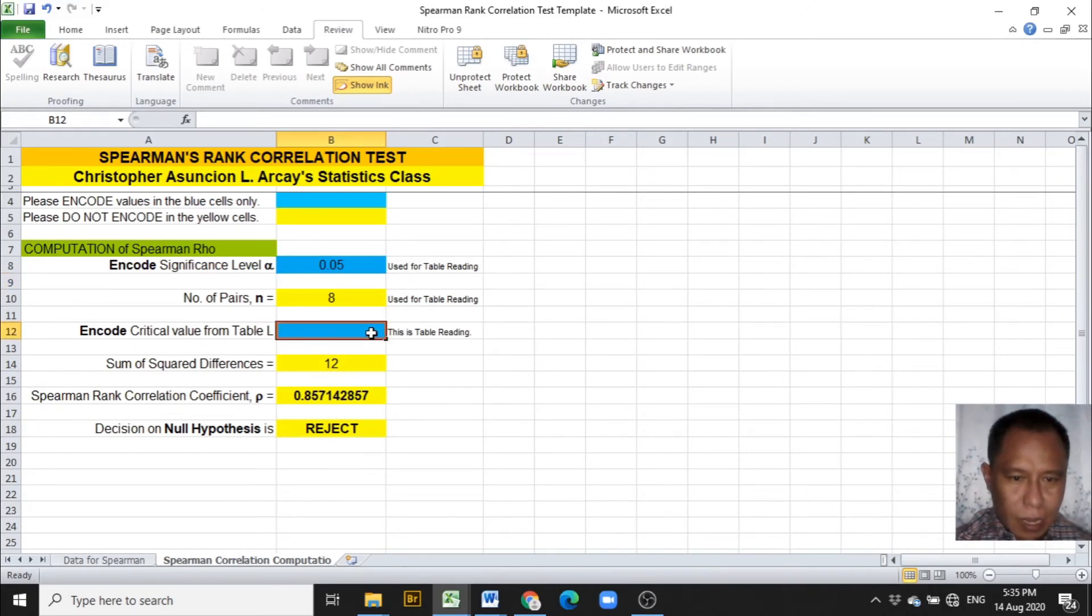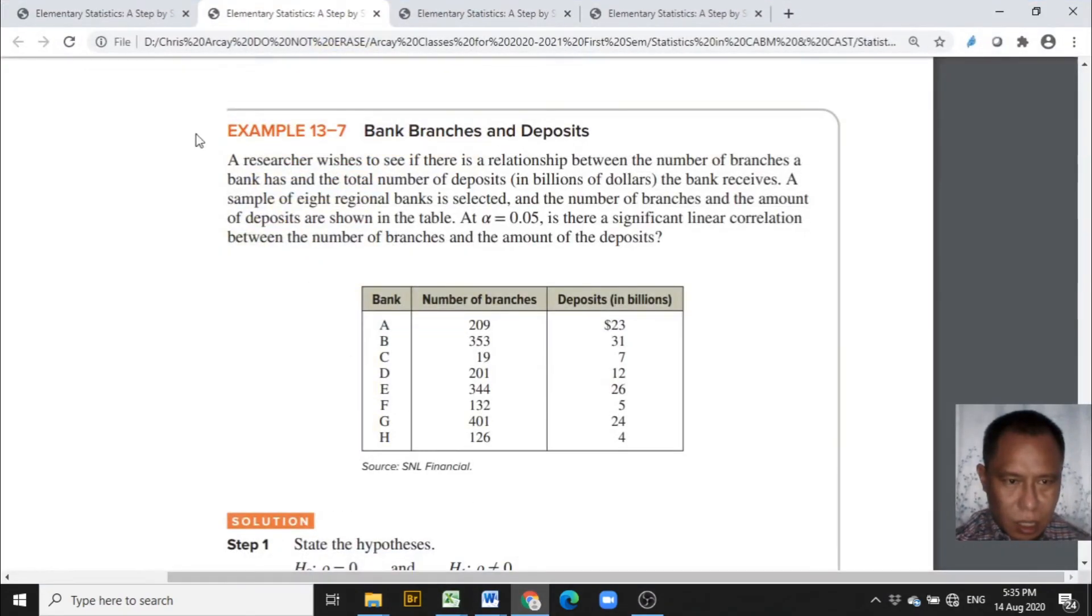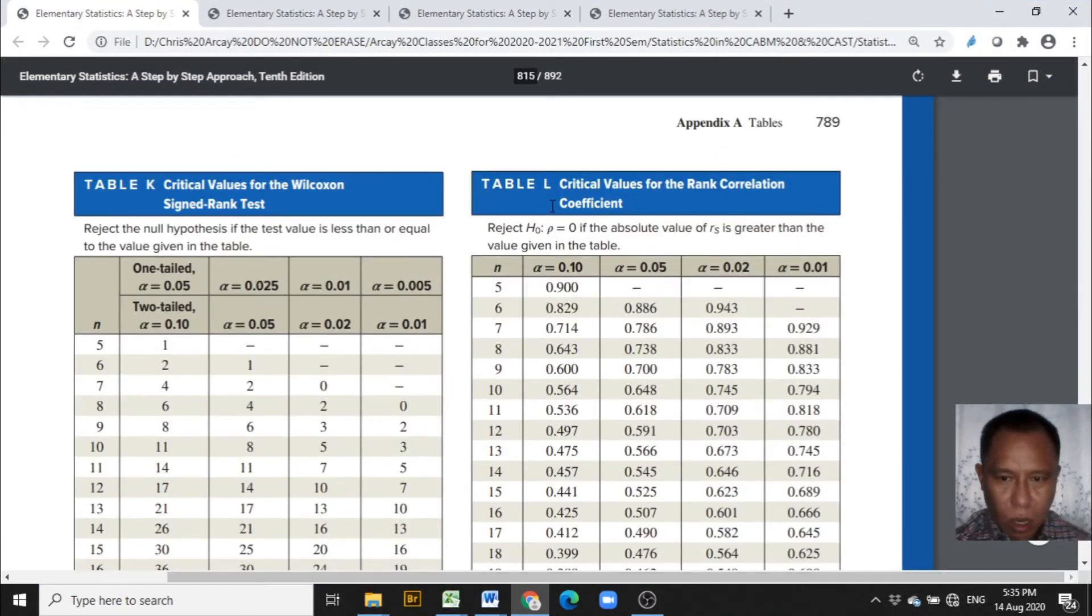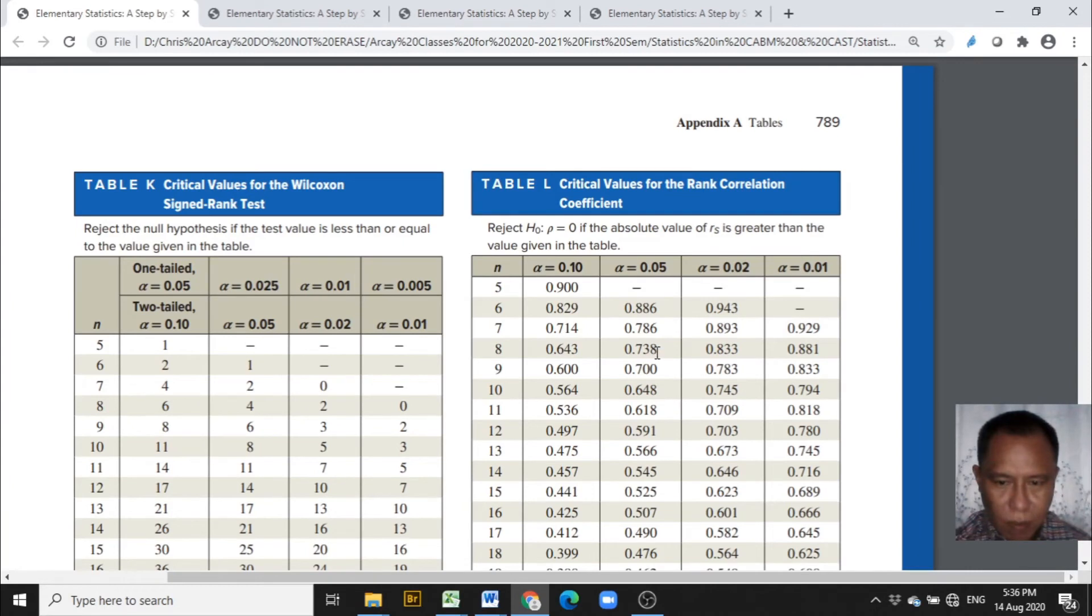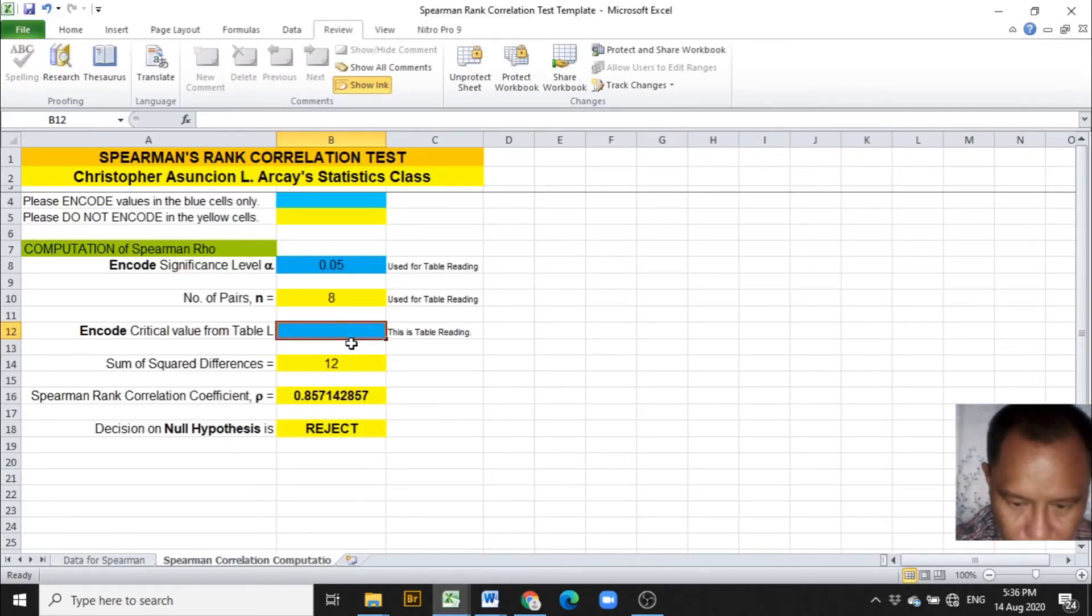Now, the last cell colored blue asks for the critical value from table L using the significance level of 0.05 and number of pairs, here's 8. This is table L of the text in page 789. And 8, 0.05 is 0.738 to be encoded. And we have the entries to be used in the Excel template.